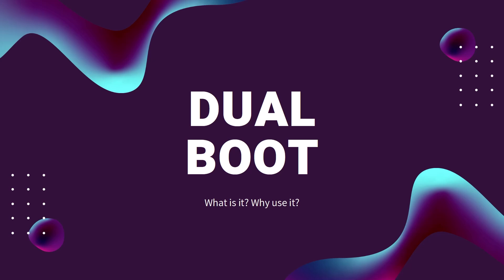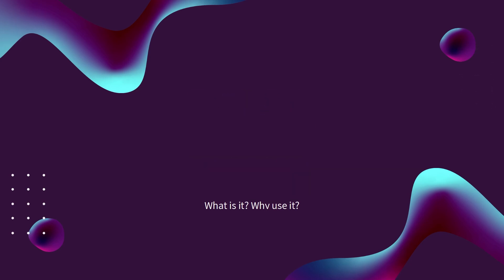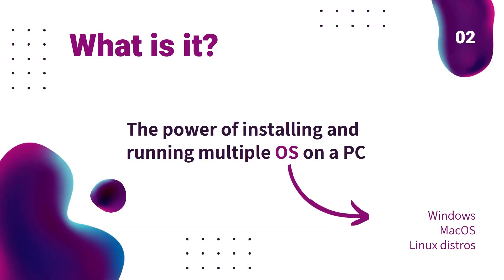Hello friends, welcome to the channel. In today's video we are going to be talking about dual boot. Dual boot simply means you'll be able to install and run multiple operating systems on your PC, so you could have Windows running with macOS, or Windows with Linux, or even all three at once. When you turn on the PC you get to select the operating system that you want to use.